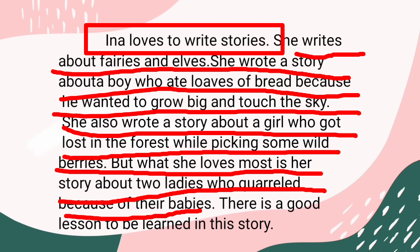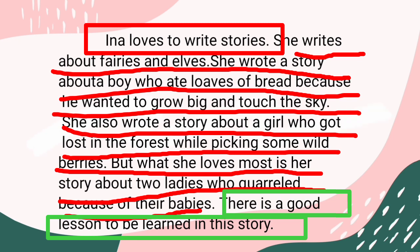And last, our concluding sentence. Again, it ends the paragraph and restates the main idea. So our concluding sentence here is: There is a good lesson to be learned in this story. Our topic sentence is in the red box, while our supporting sentences are underlined in red, and our concluding sentence is in the green box.